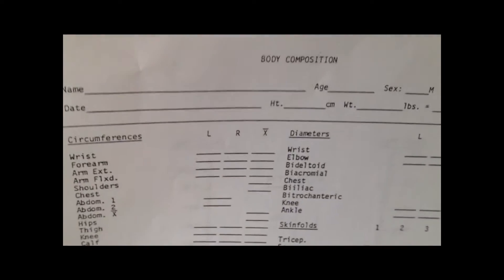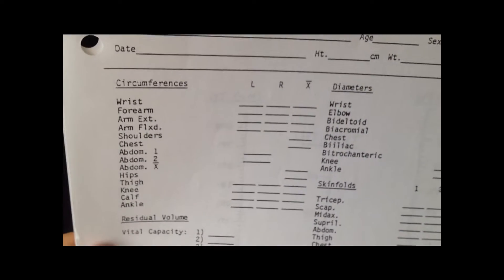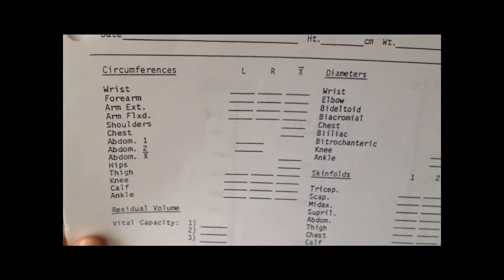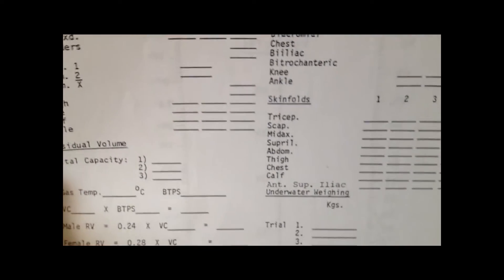This video is going to cover the Heath-Carter Somatotype Rating Worksheet, which can be found in Lab 12 of the Exercise Physiology Course Reader. Before we can start working on this, students should ensure that they have done Lab 11, which has the Body Composition Worksheet that has their circumferences, diameters, and skin folds.